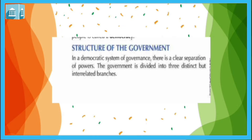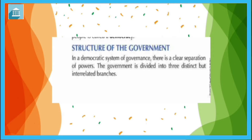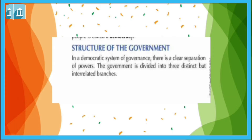In a democratic system of governance, there is a clear separation of powers. The government is divided into three distinct but interrelated branches. Distinct means they are separate, but 'interrelated' means they are connected to each other. So the government is divided but connected.